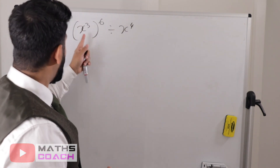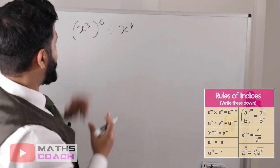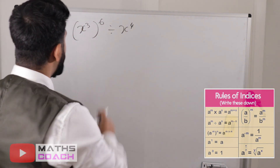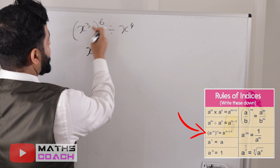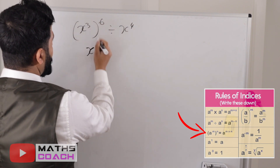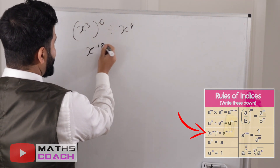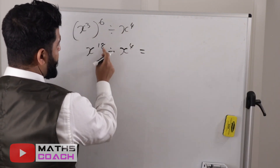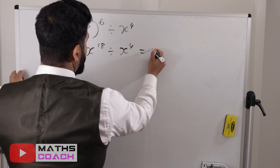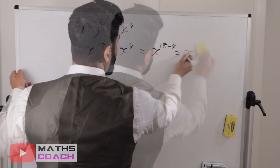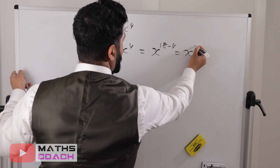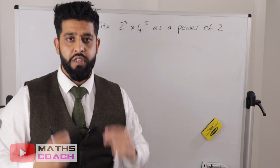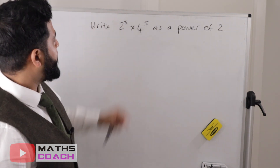Now x to the power of 3, all to the power of 6, divided by x to the power of 4. First we multiply the two powers: 6 times 3 is 18, so we get x to the power of 18. Then dividing, we take the powers away: 18 minus 4 gives x to the power of 14. This is higher-level GCSE work.